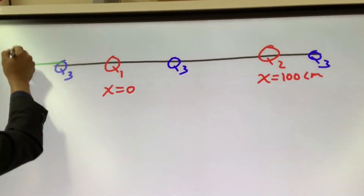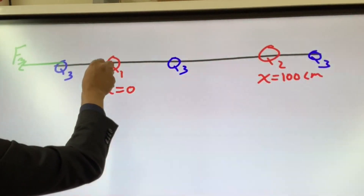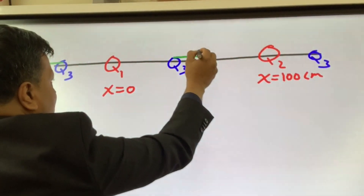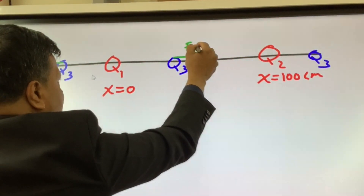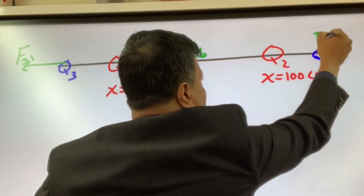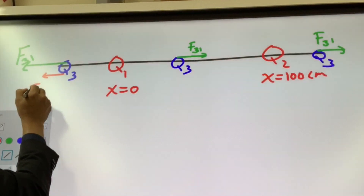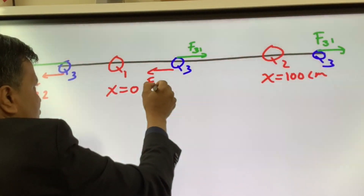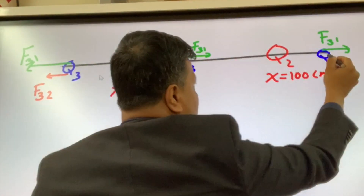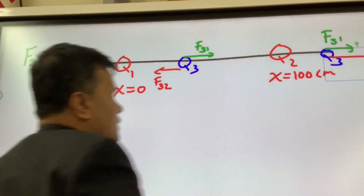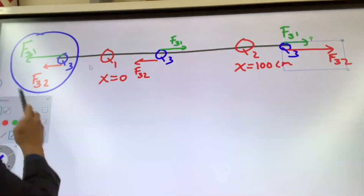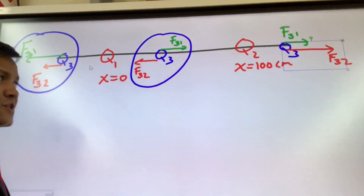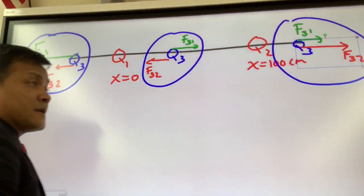This would be the force on q3 due to q1, and this would be the force on q3 due to q2. As you can see: this position has a net force because the green vector is longer than the red one; this middle position has zero net force because the green and red vectors are equal in magnitude; and this position has a net force because the red vector is longer than the green one.